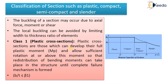Plastic cross sections are those which can develop their full plastic moment, that is Mp, and allow sufficient rotation at or above this moment, so that redistribution of bending moments can take place in the structure until a complete failure mechanism is formed.